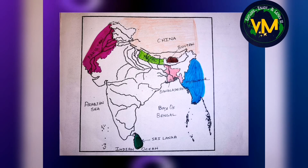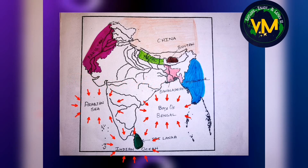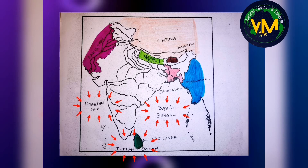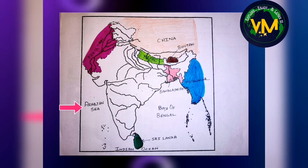Now let's learn some basics of our India map. We all know that India is called a peninsular country as it is bounded by water on three sides. Let's identify these water bodies. We have the Arabian Sea in the west, Bay of Bengal in the east, and Indian Ocean in the south.